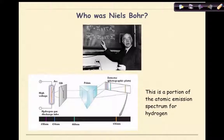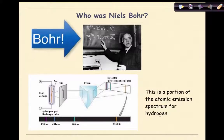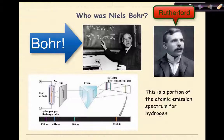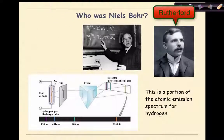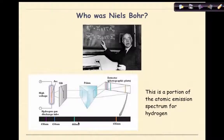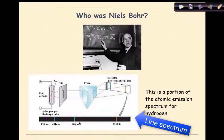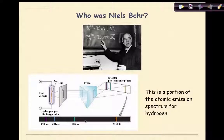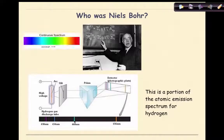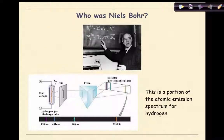Who was Niels Bohr? Niels Bohr basically took the work of Ernest Rutherford and expanded on the model of the atom. What he found was when atoms of an element are exposed to energy, a unique line spectrum characteristic of that element is observed. This line spectrum is also known as spectral lines or atomic emission spectrum. This is a spectrum that contains specific colors or wavelengths. Unlike a rainbow, a line spectrum is not continuous, as you can see individual colors.